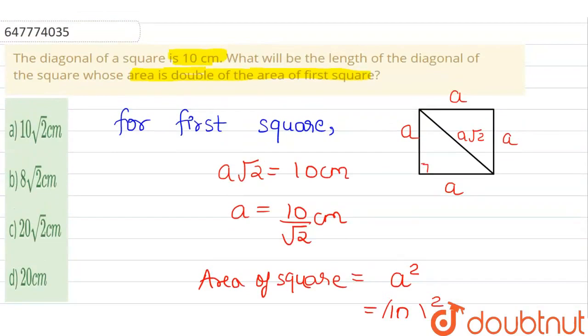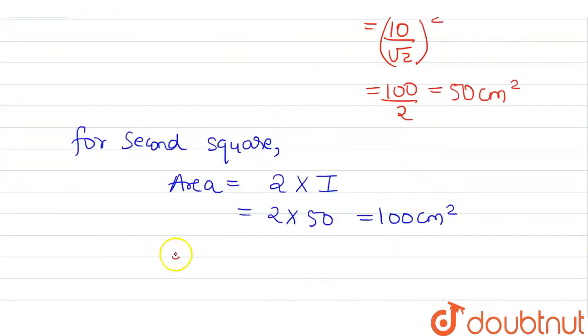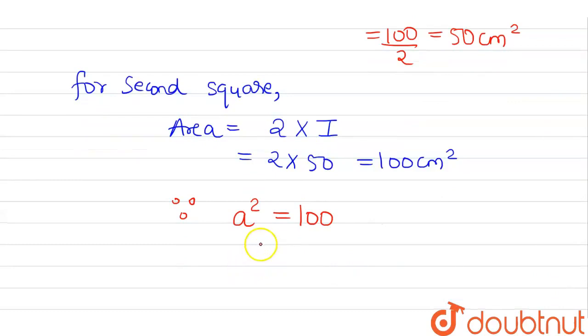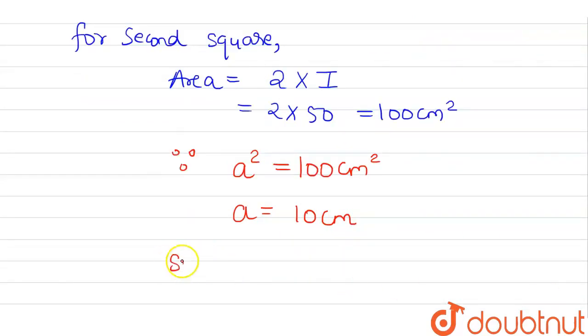Now, what do you do? The second square's area, since you know a² = 100 cm². So a = 10 cm. Now, if you know the diagonal, the diagonal is a√2.